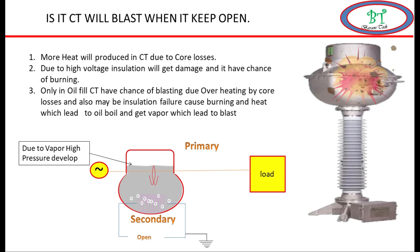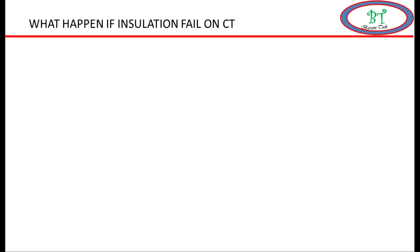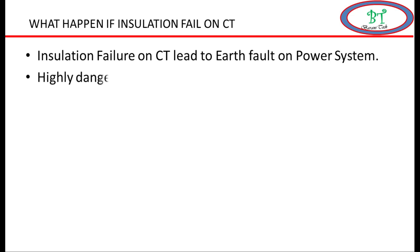Next, we will see what happens if insulation fails on CT. The insulation failure on CT leads to earth fault on our main power system. Second, it is highly dangerous for the person who touches on the secondary side.